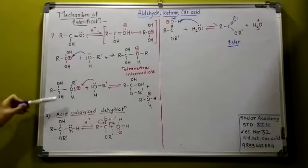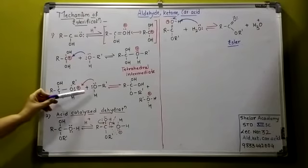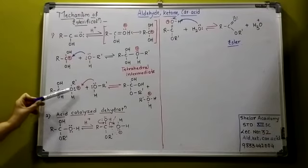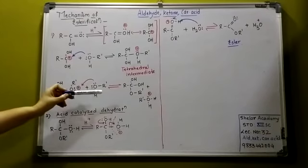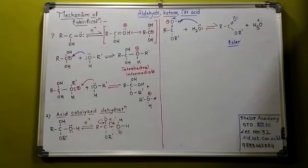The next step: it is having a plus charge, so it is again reacting with an alcohol. One hydrogen leaves, and that is the intermediate which is formed in the reaction.